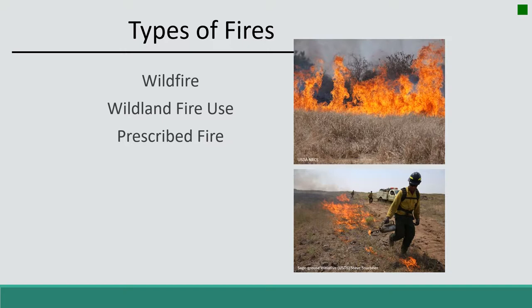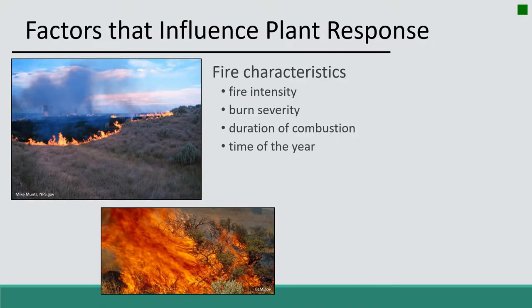Prescribed fire is intentionally ignited under very specific conditions — certain temperatures, relative humidities, and wind speeds must be met. We want this to be very controlled so it doesn't get away. Wild-on-fire use is typically an unintentional ignition, like lightning or by humans, but it's not suppressed because it's in an area with a wild-on-fire plan and it meets the guidelines of that plan, so we let it burn.